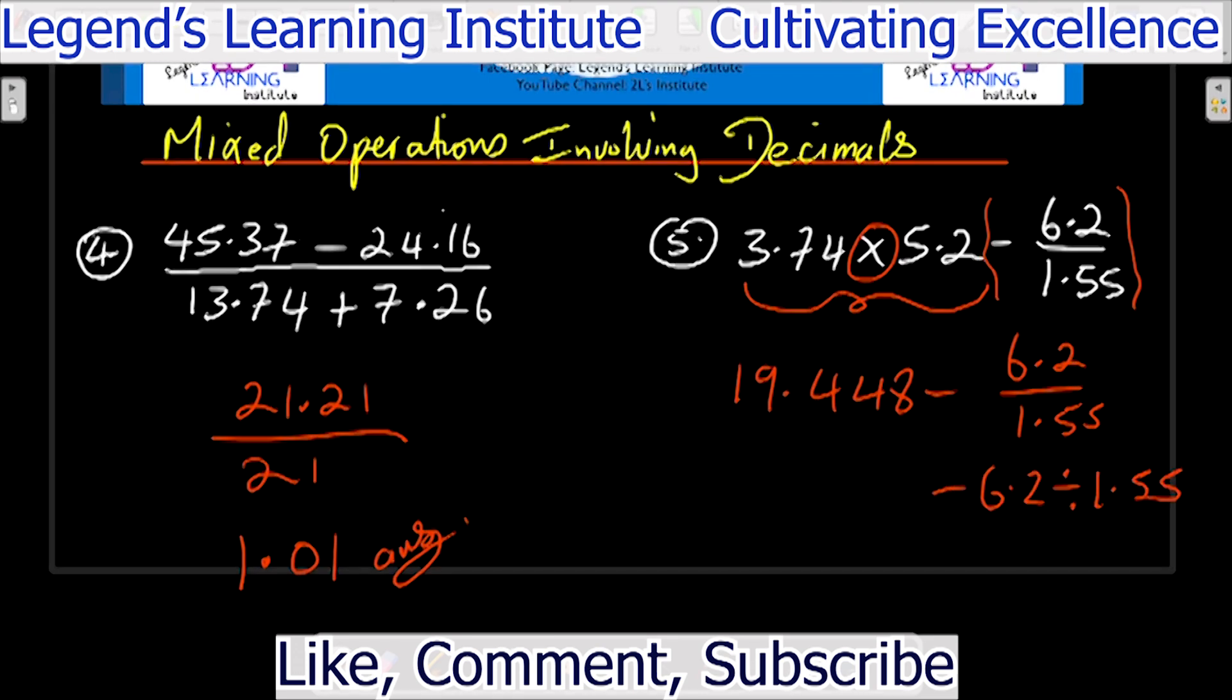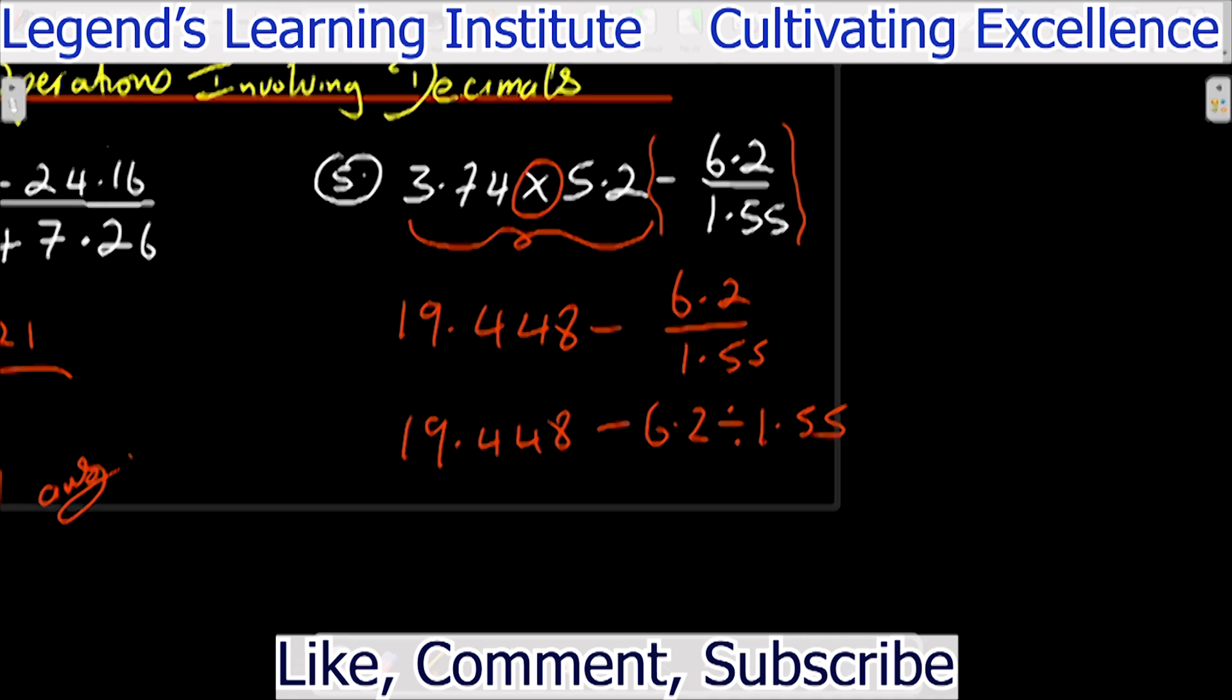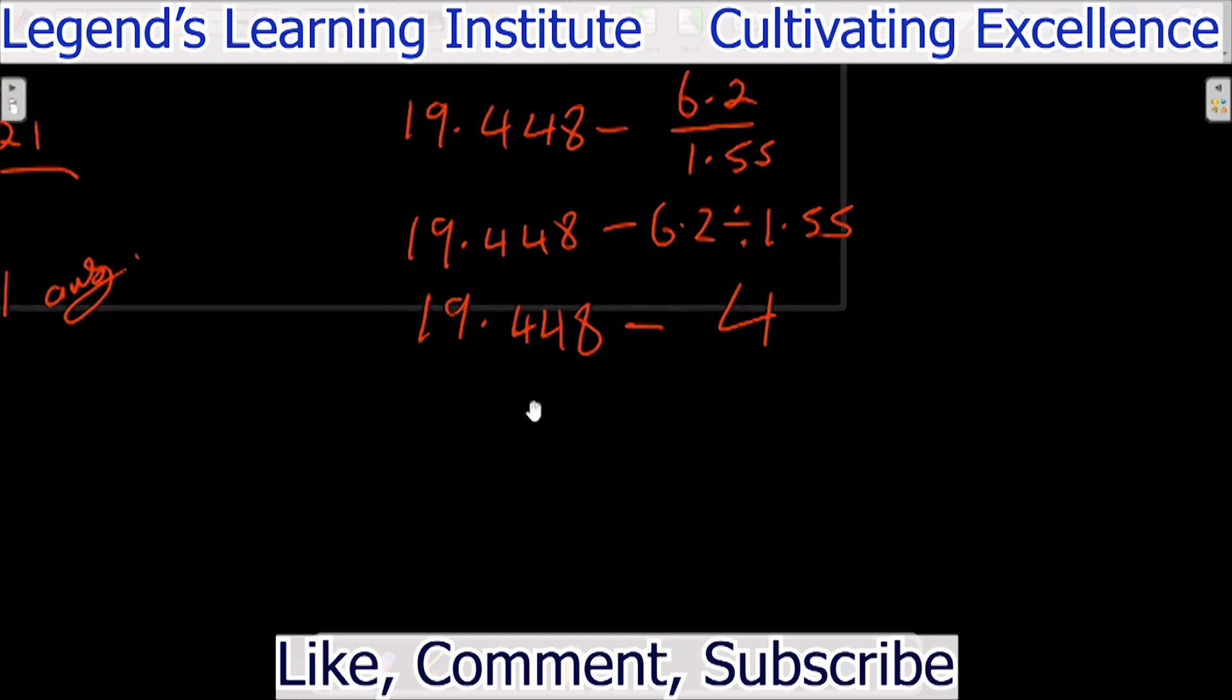And then we bring down everything else, 19.448. So 6.2 divided by 1.55, that gives us 4. And then we bring down the 19.448 minus. So 19.448 subtract 4, that gives us 15.448 as our answer.